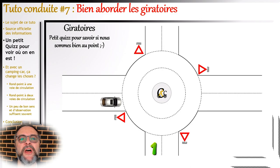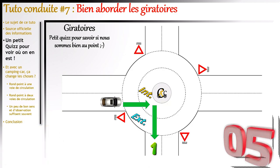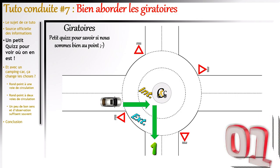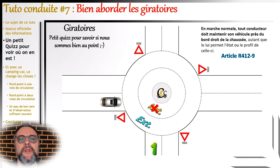Premier cas de figure : j'arrive avec mon véhicule et je souhaite sortir à la première sortie. Est-ce que je peux me permettre de viser le centre du giratoire, puis ensuite prendre à droite ? Dans ce cas précis, il n'en est pas question : le code de la route est très clair. On doit rester le plus près de la droite de la chaussée.